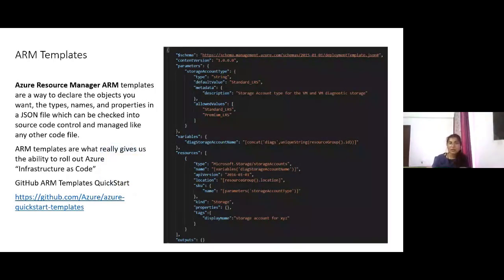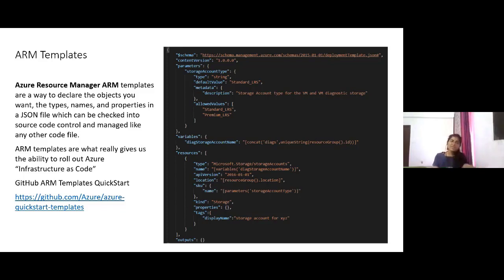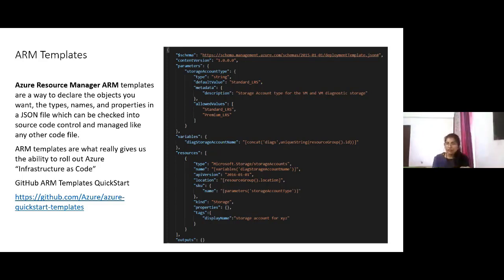Those templates are nothing but Azure Resource Manager templates. Azure Resource Manager templates let you define the object, name, and properties in a specific JSON file, and you can manage this JSON file and check it into source control — be it TFS, SVN, or Git. It gives you the ability to create your resources in a declarative syntax, and you can get repetitive results and orchestrate them.